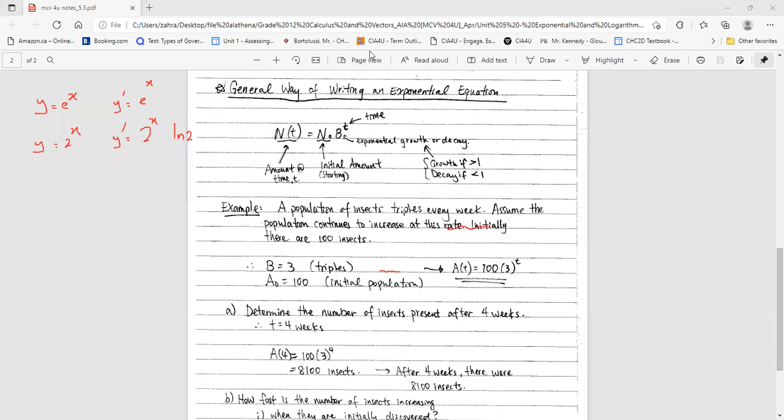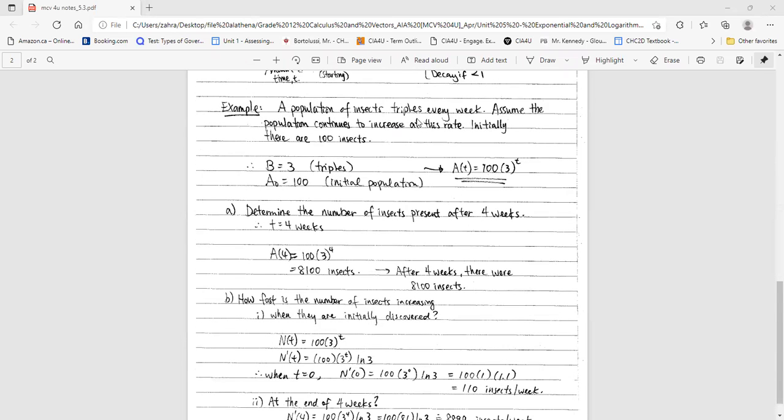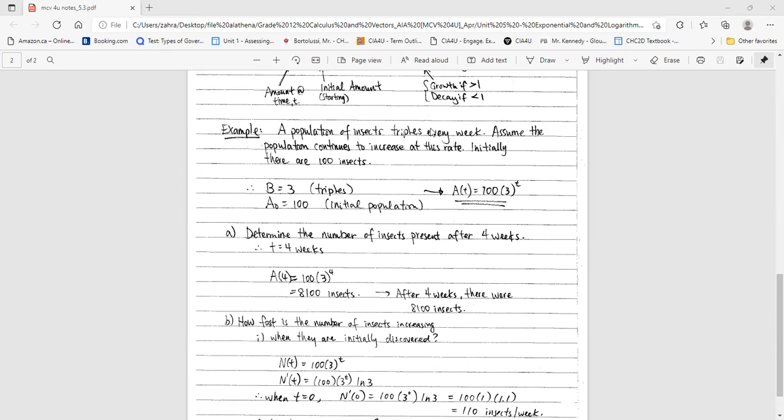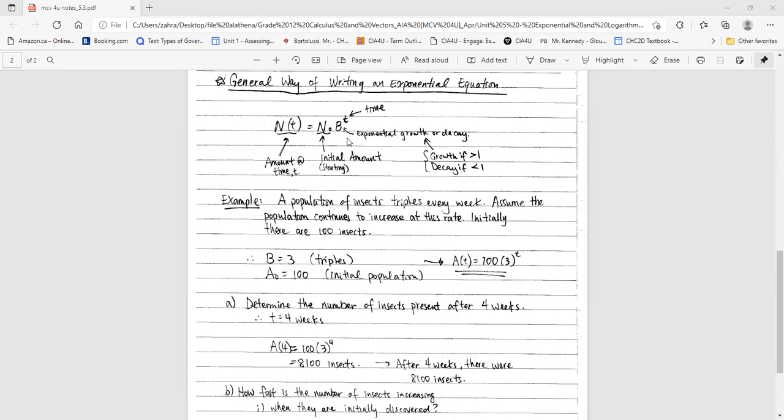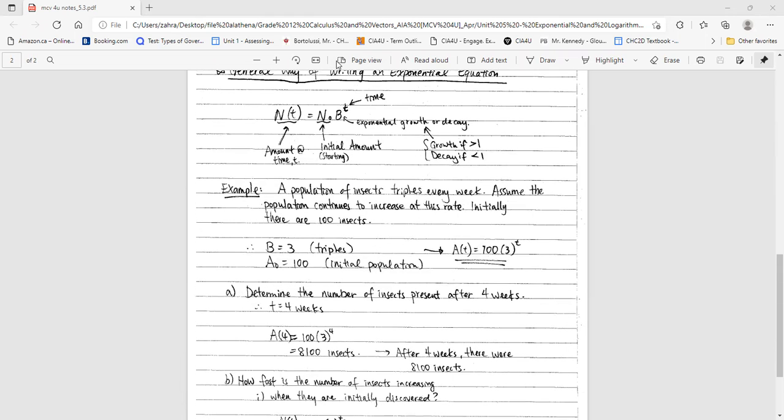Look at this question. A population of insects triples every week. When I say triples every week, the base is going to be 3. In this equation, what is missing is h, but h is t divided by h. h is the period of the doubling or tripling or getting half. If this is half, it's going to be half-life. Here it said every week, that's why if you want to write the equation, the b is 3 and h is 1 week. The h and t have the same unit. If this is in weeks, the time is going to be in weeks as well.